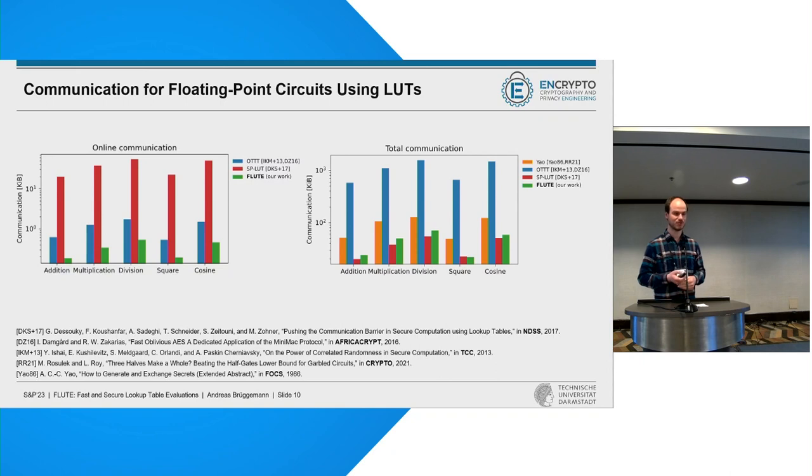If we look at the total communication, we see that now we are able to outperform OTT by a factor of about 20. At the same time, often, we are a bit worse than SPLUT, up to 20%, but also in one case, 5% better. So it's somehow comparable still while having a much better online phase. Here, we also compared to garbled circuits as this provides a constant round online phase. And we are better on total communication by a factor of two. But so that you don't wonder, we excluded garbled circuits from the online phase because we don't consider the input and output phases here.